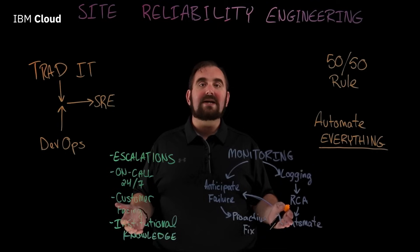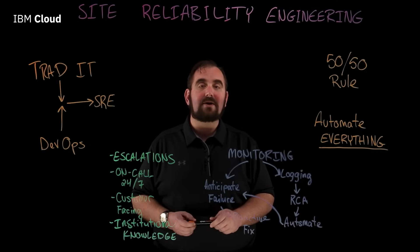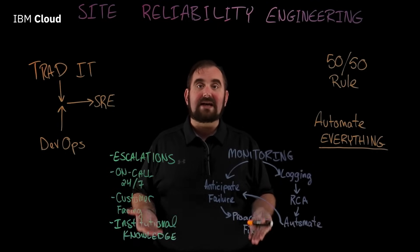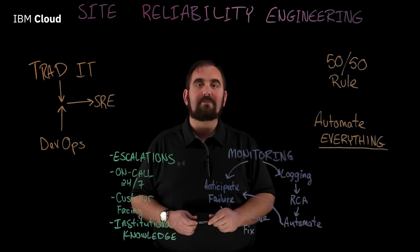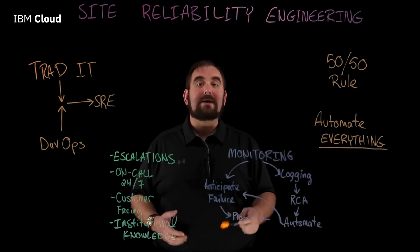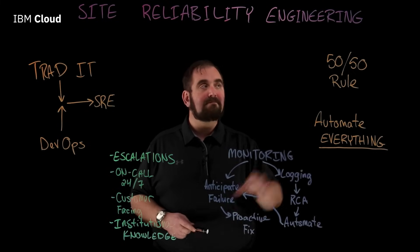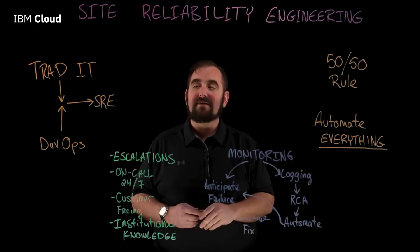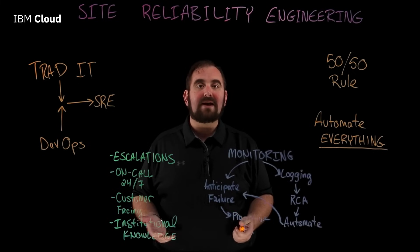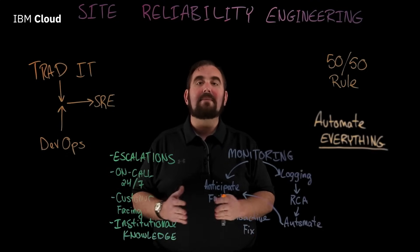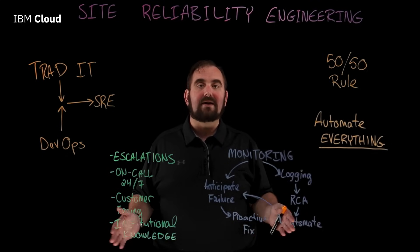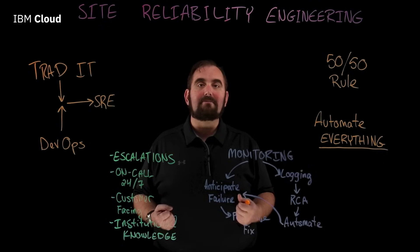Large organizations can afford an entire SRE department. They can stand it up or transition an existing operations group into it by empowering that group. That 50-50 rule — spending half their time automating, half their time fixing problems, and automating all of the things. Automate everything. Because the less manual work and manual intervention you have, the happier that SRE team is going to be.